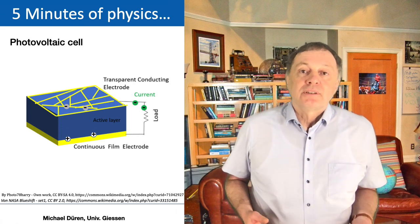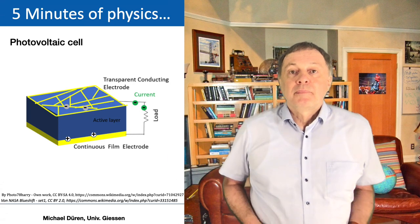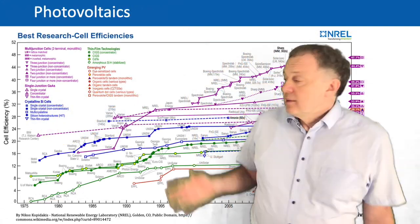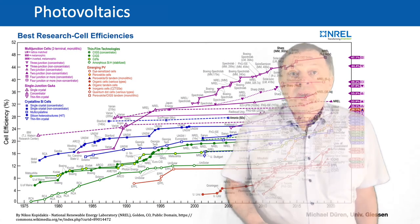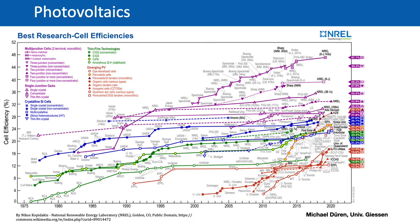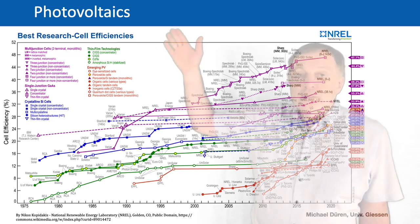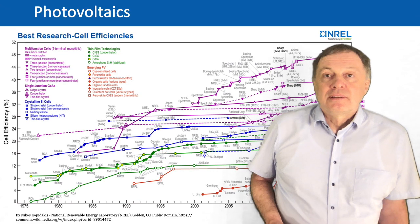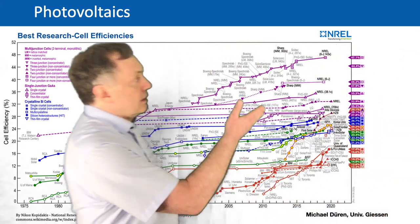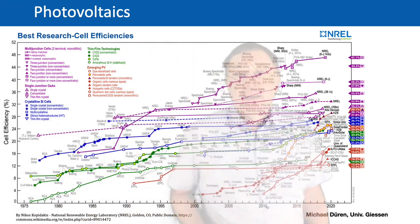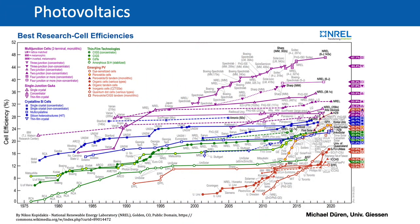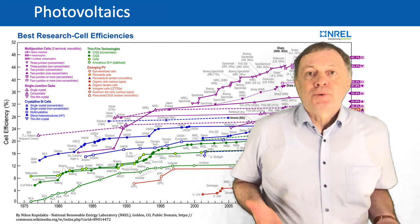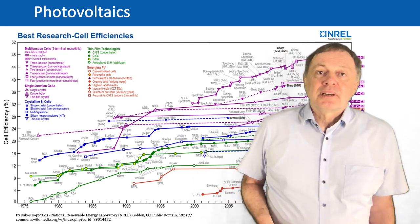Nowadays there is a huge research program going on for many years to improve these cells and to find better materials for better efficiencies. This is shown here on this diagram, which shows a plot starting in 1975 until today. The vertical scale is cell efficiency and the highest efficiencies shown today are about 47%. So there has been great progress in the last decades in increasing efficiencies.